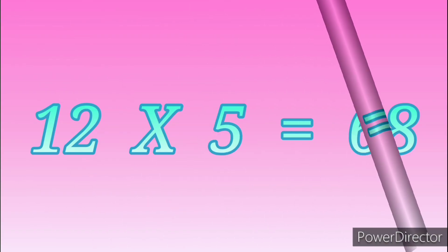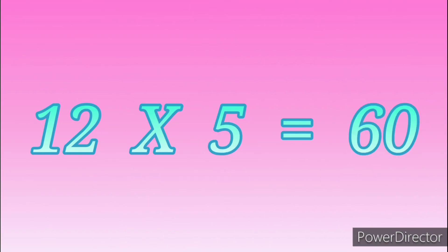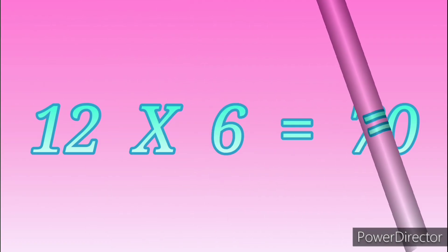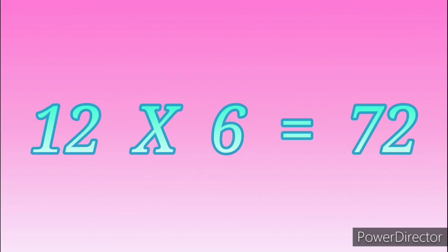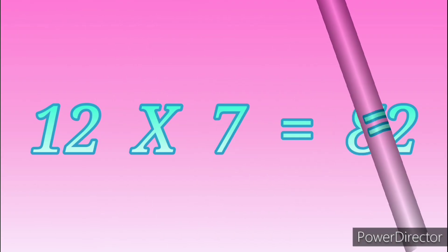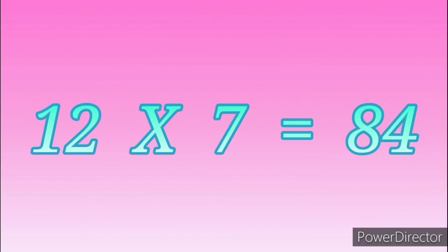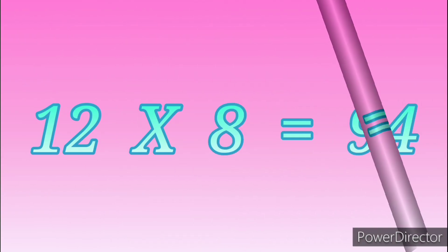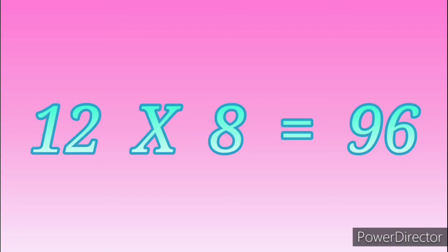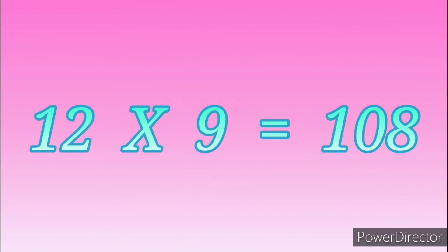Twelve fives are sixty. Twelve sevens are eighty-four. Twelve eights are ninety-six. Twelve nines are one hundred and eight. Twelve tens are one hundred and twenty.